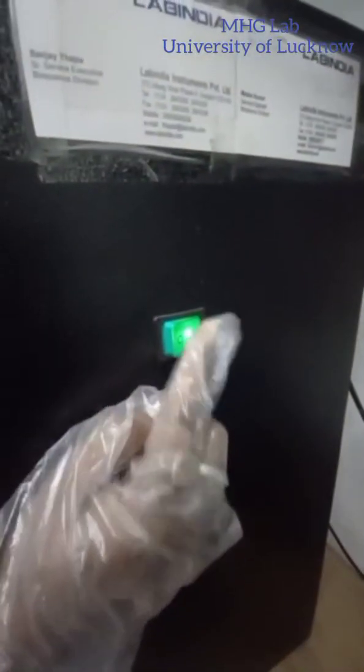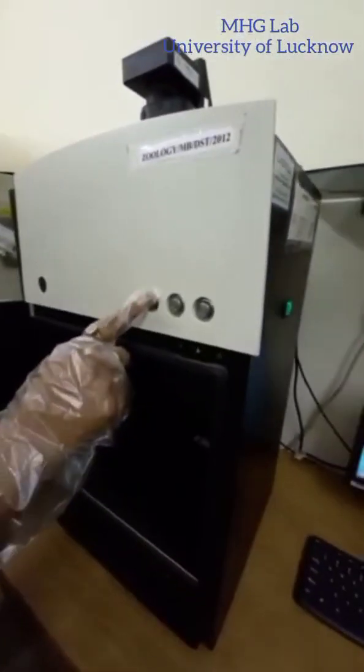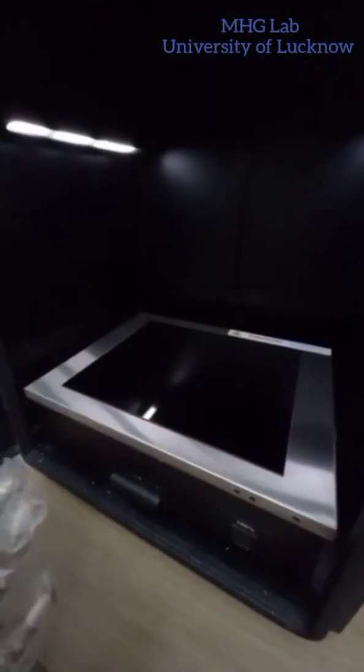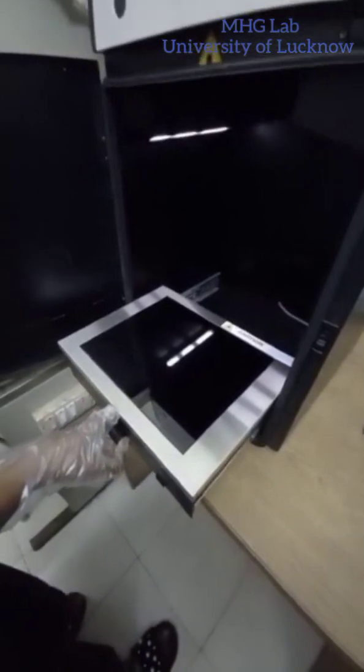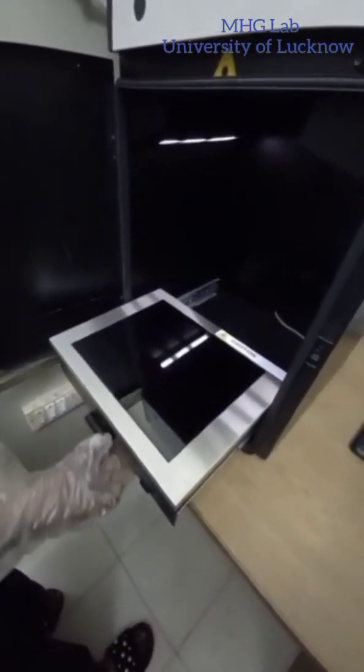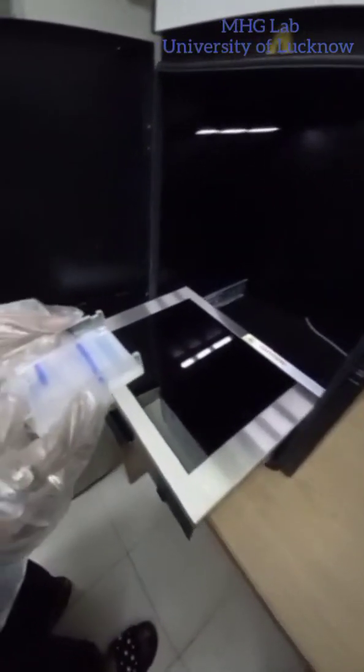This is green button, this is off and this is on. So when white light is pressed, the chamber illuminates. Then we can pull this board out and this is our agarose gel which we have run earlier.